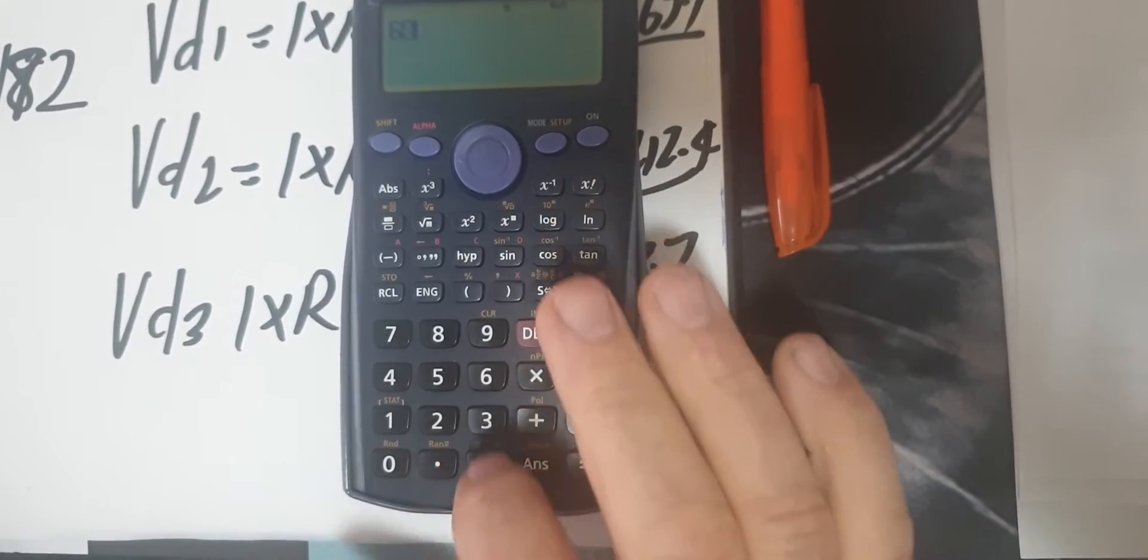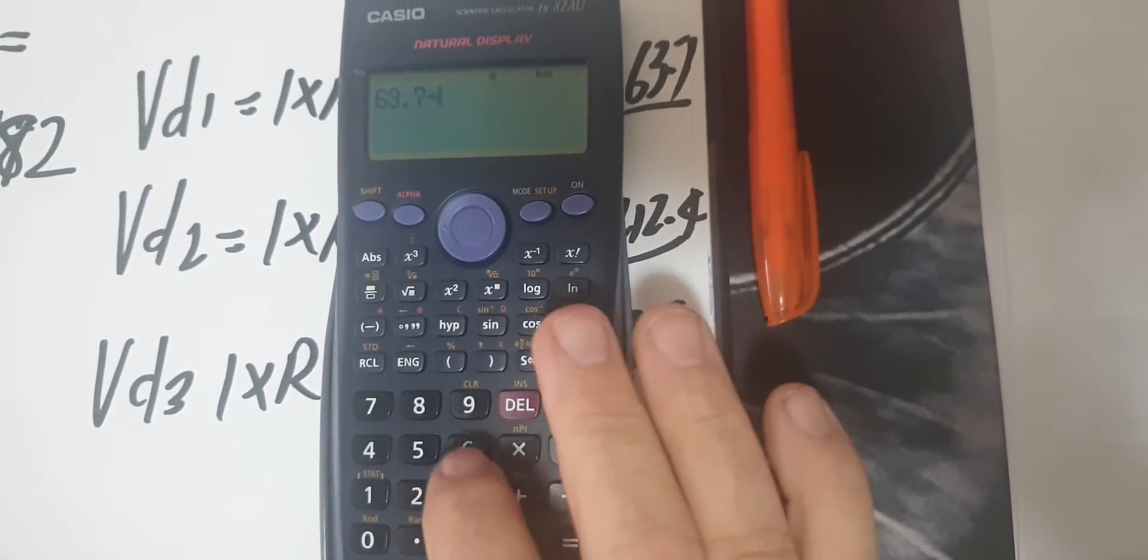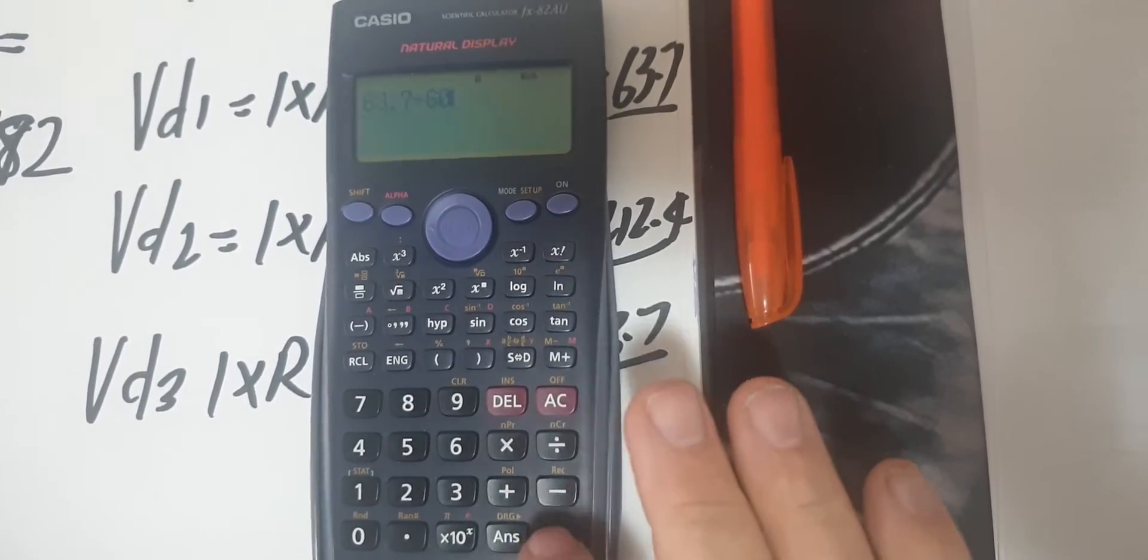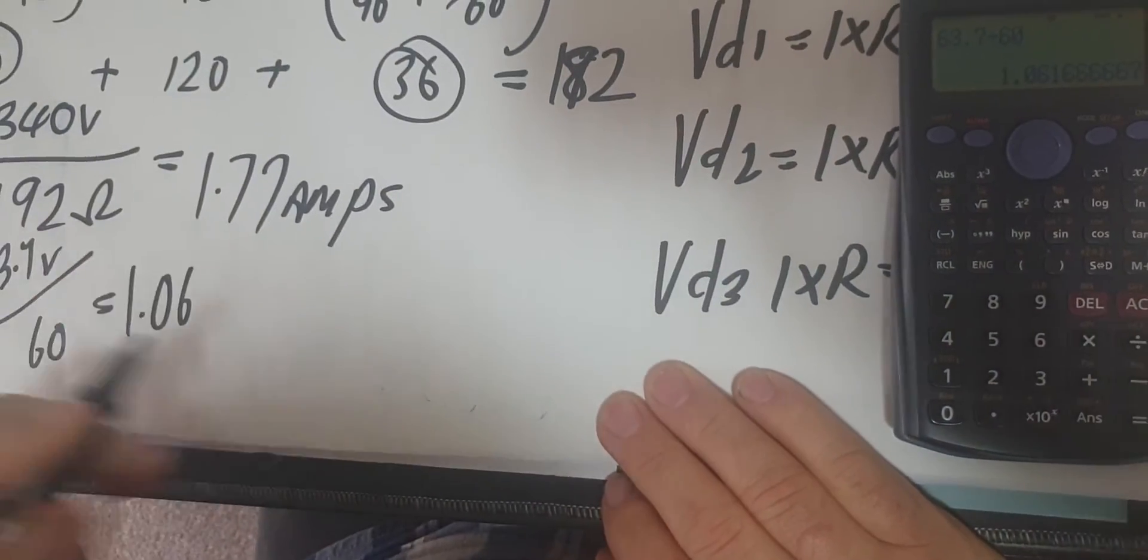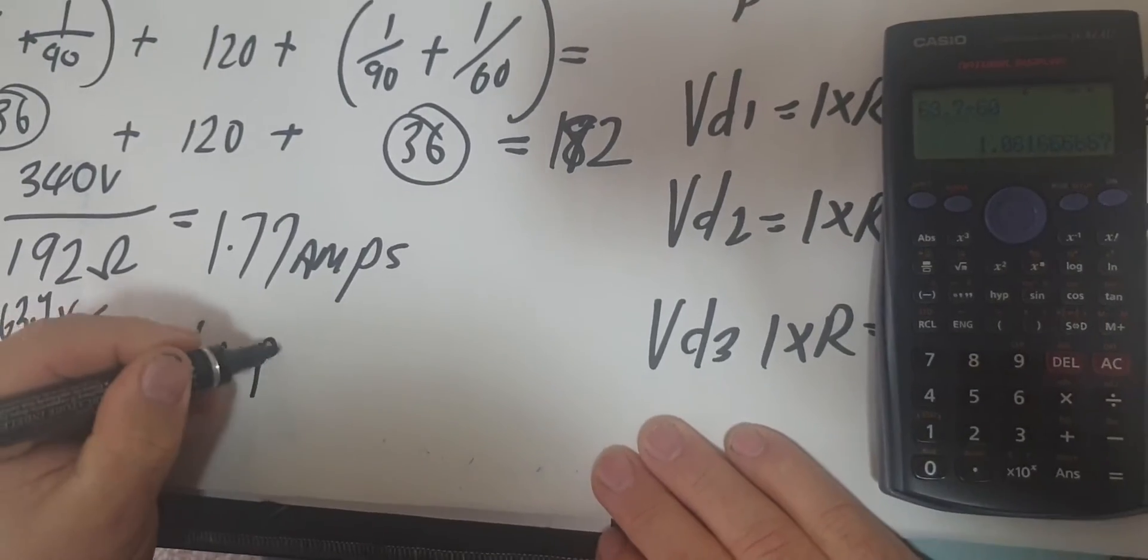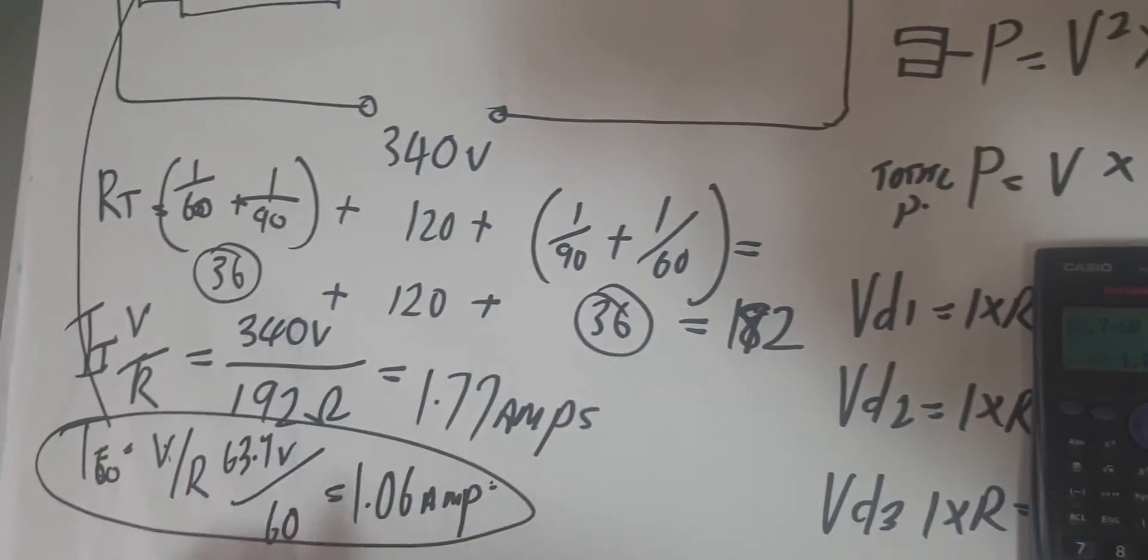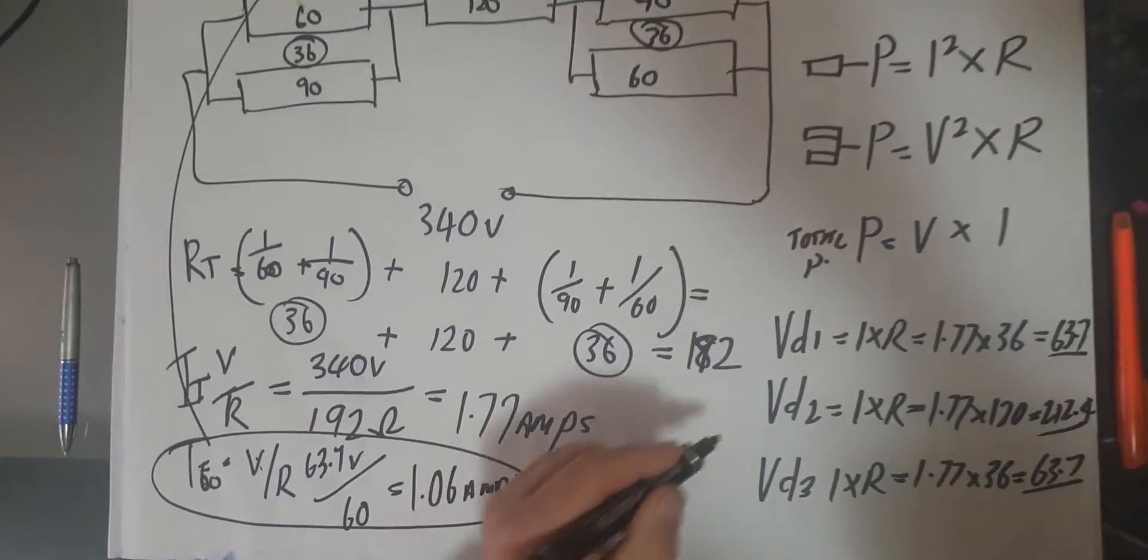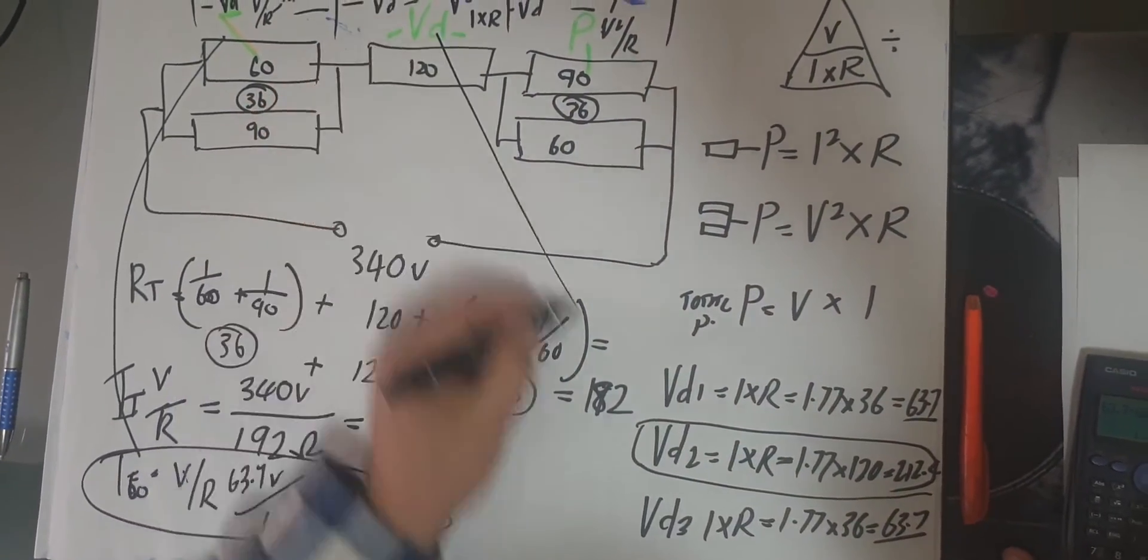So we do 63.7 divided by 60, and we get 1.06 amps. So I knew it roughly because that's going in there, it's going to be 1 point something amps. So that is the answer for that one. Now the second one we've already done because we did the voltage drop for the second one. That's done.